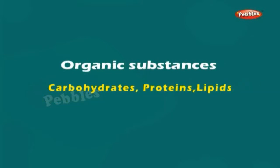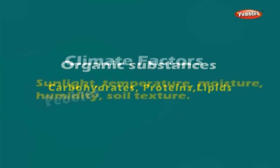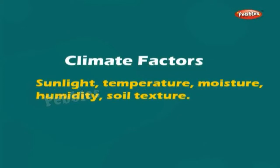Organic substances include substances like carbohydrates, proteins, lipids etc. Climatic factors include factors like sunlight, temperature, moisture, humidity, soil texture etc.